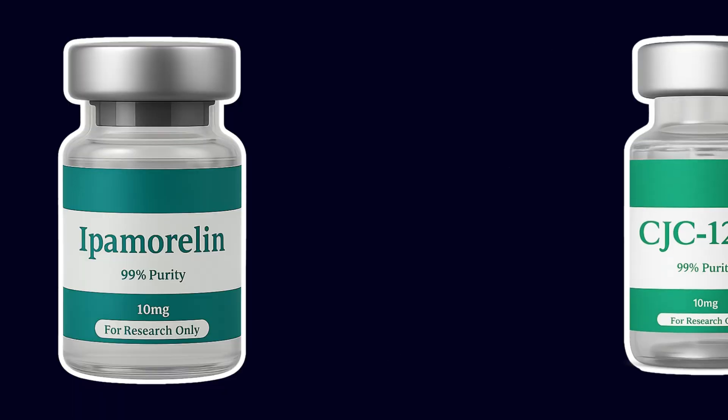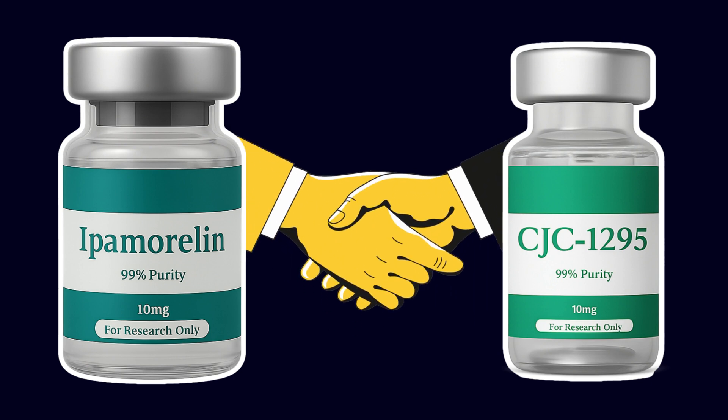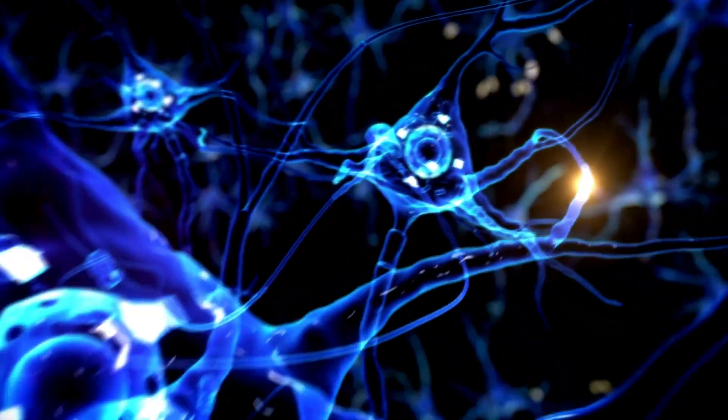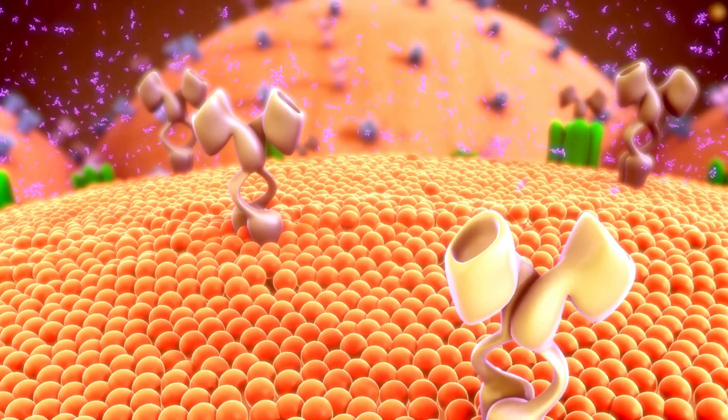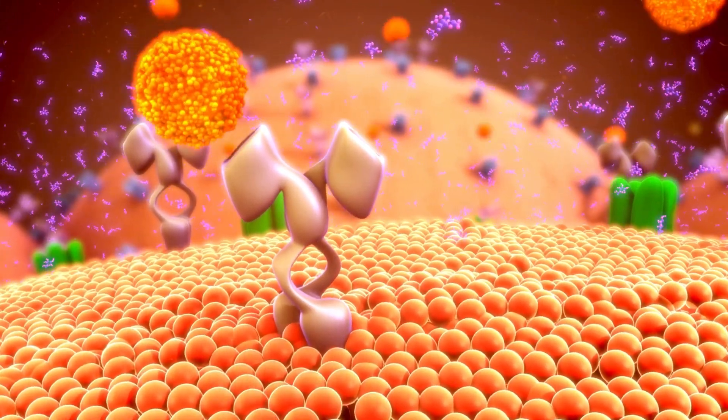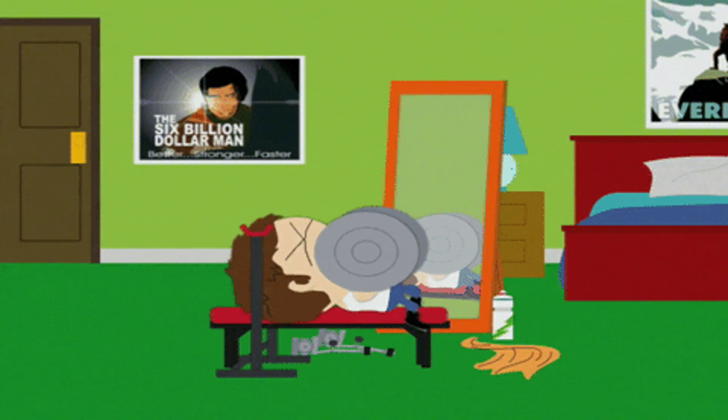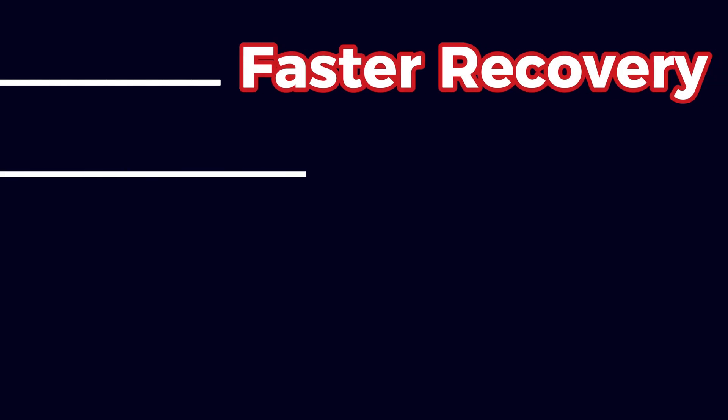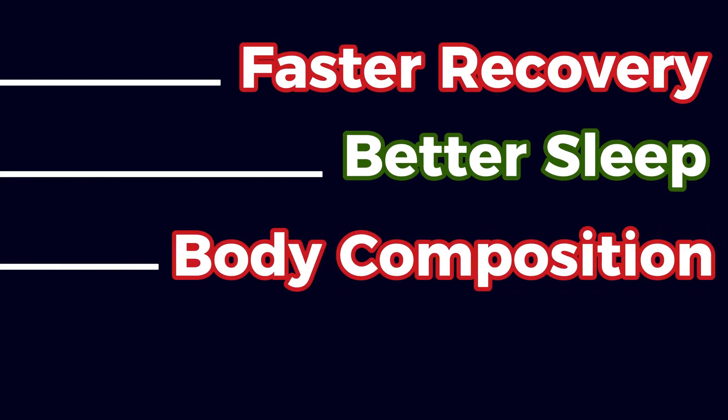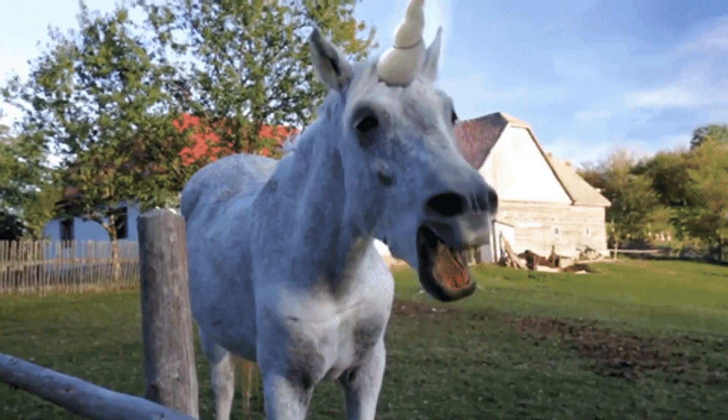It's often stacked with CJC1295, which is a peptide that increases growth hormone-releasing hormone, while Ipamorelin triggers the actual release of growth hormone itself. Together, they create a stronger, longer-lasting anabolic pulse, leading to faster recovery, better sleep, and improved body composition. But it's not magic unicorn juice.